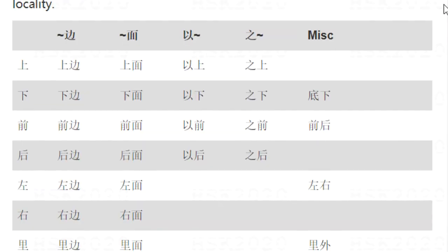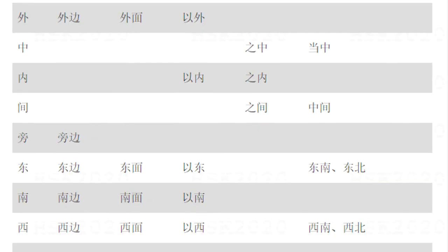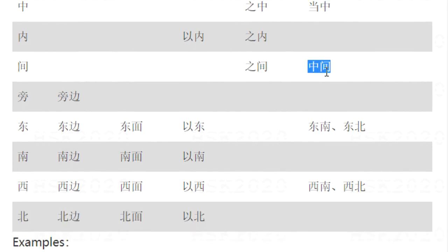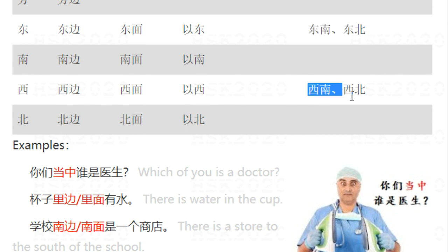Finally, we have miscellaneous forms. 底下 means beneath — 底 means bottom, so 底下 means beneath the bottom. 前后 (before and after together), 左右 (left and right), 里外 (inside and outside). 当中 means in between or in the middle. 中间 means in the center or in the middle. 东南, 东北 (southeast, northeast), 西南, 西北 (southwest, northwest).